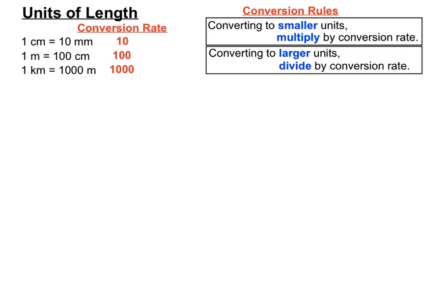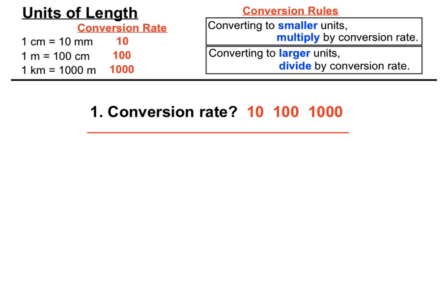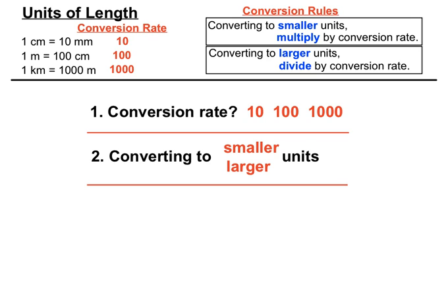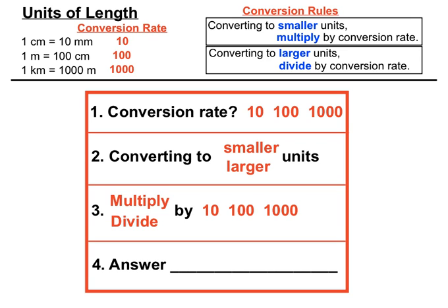It's a bit like upside-down land. We first think about the conversion rate, then whether we're converting into smaller or larger units, which tells us whether to multiply or divide. Then we move the decimal point in the appropriate direction, or check on our calculator.